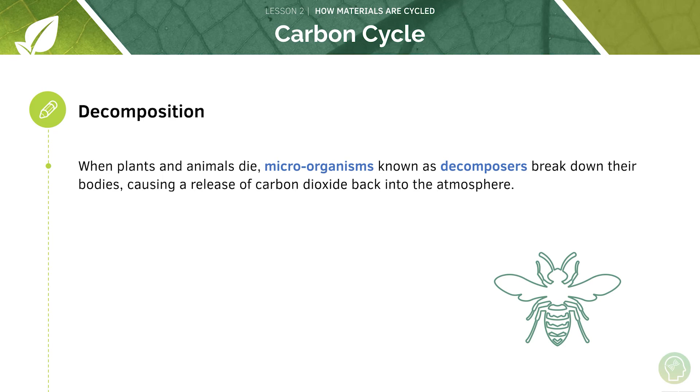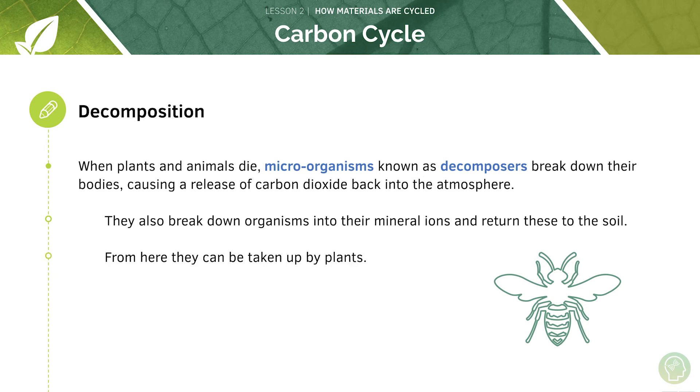Then we have decomposition. So when plants and animals die, microorganisms known as decomposers break down their bodies causing a release of carbon dioxide back into the atmosphere. They also break down organisms into their mineral ions and return these to the soil. And from here this can then be taken up by plants. So these kinds of decomposers are known as detritivores.